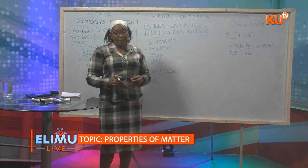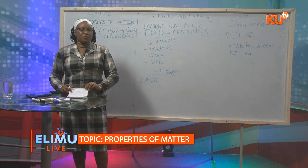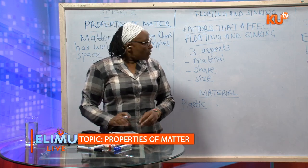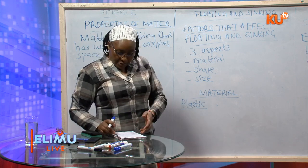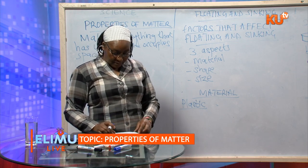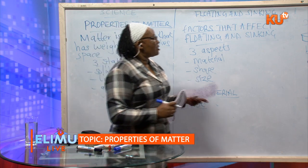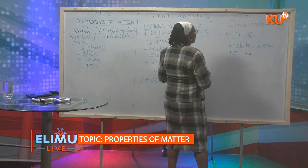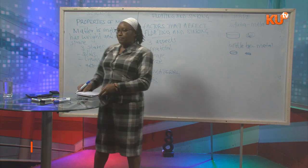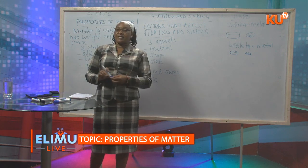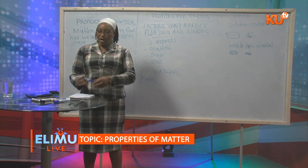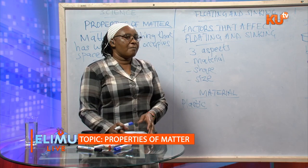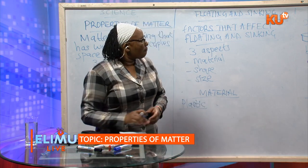So shape affects floating and sinking. Items which are made of sinker materials, when you change their shape, they will float. A boat is very heavy, but because of its shape, it is able to float in water.